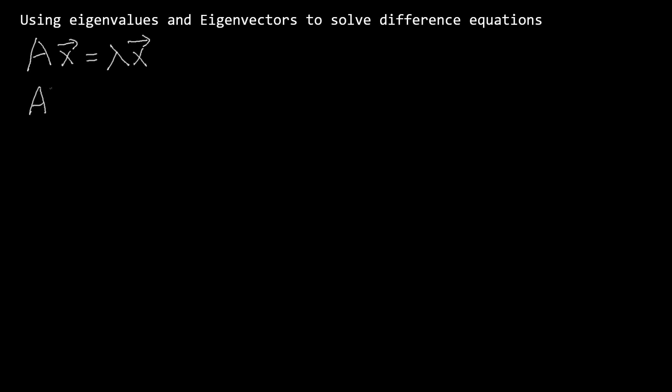When we multiply both sides by A, the matrix A on the right side can be replaced by lambda. We can scale both sides as many times as we want. The equality holds true.